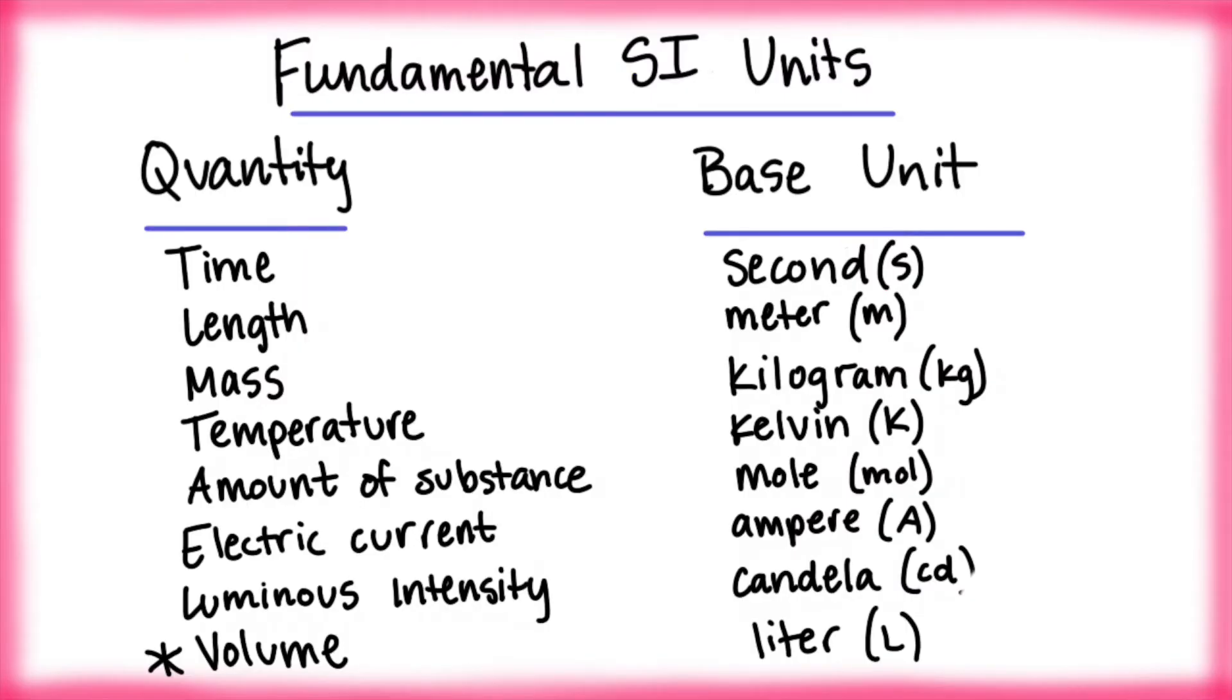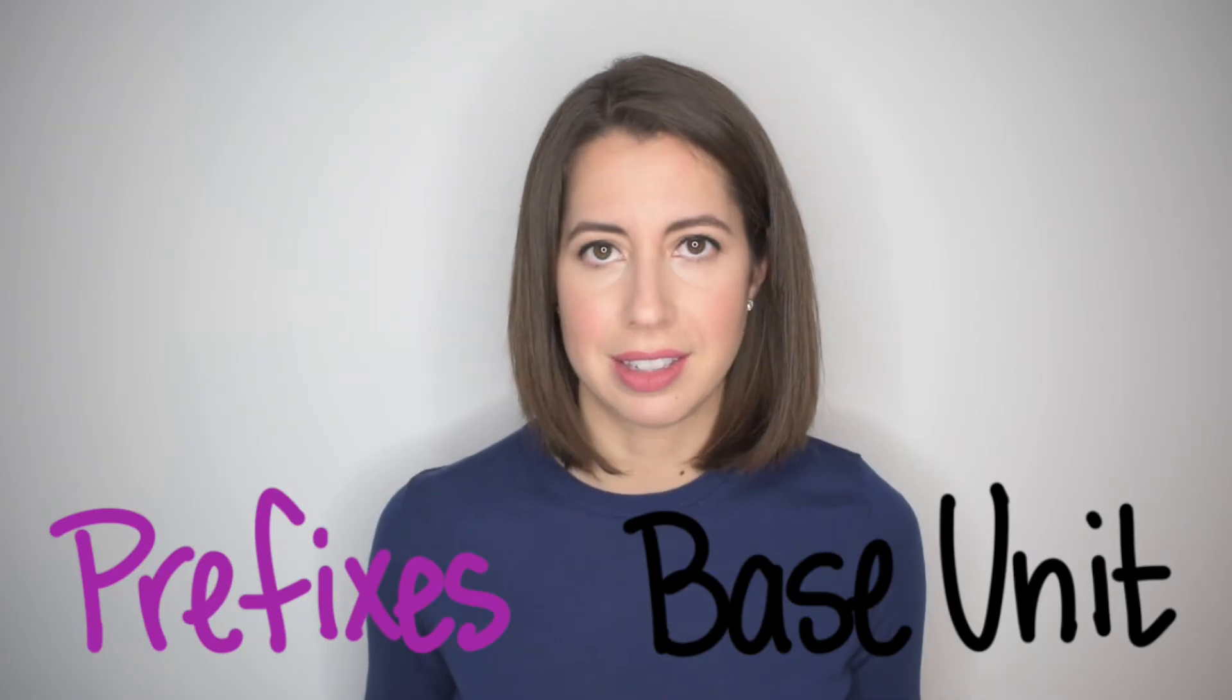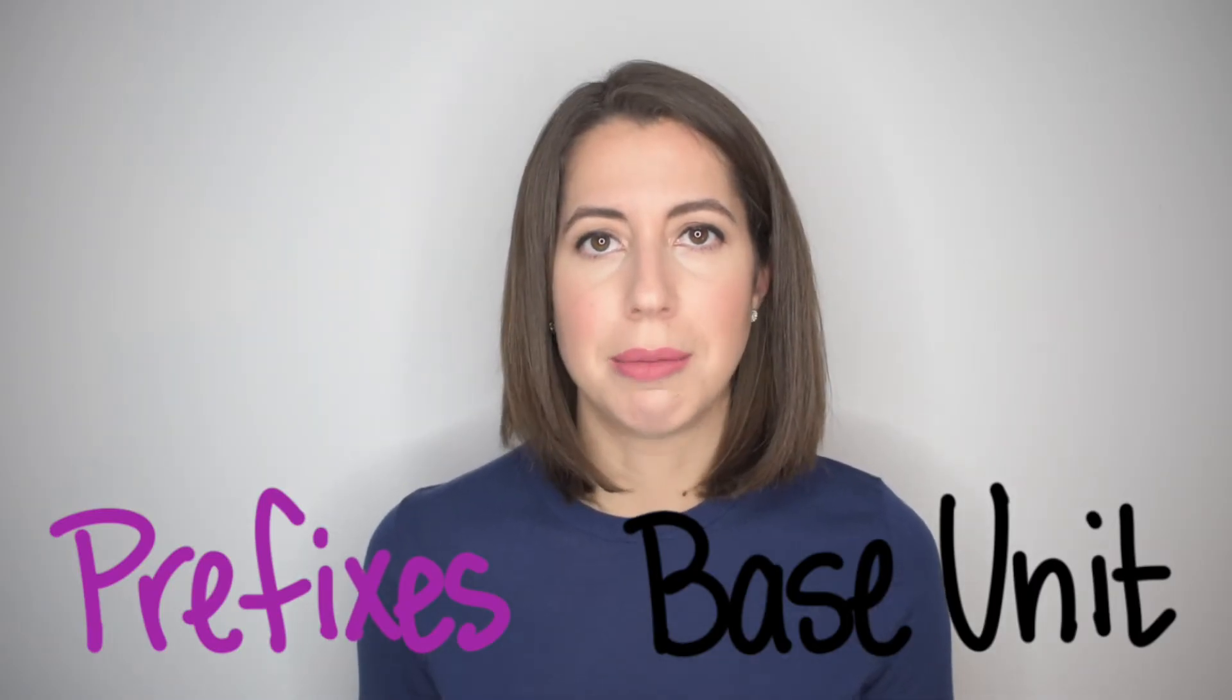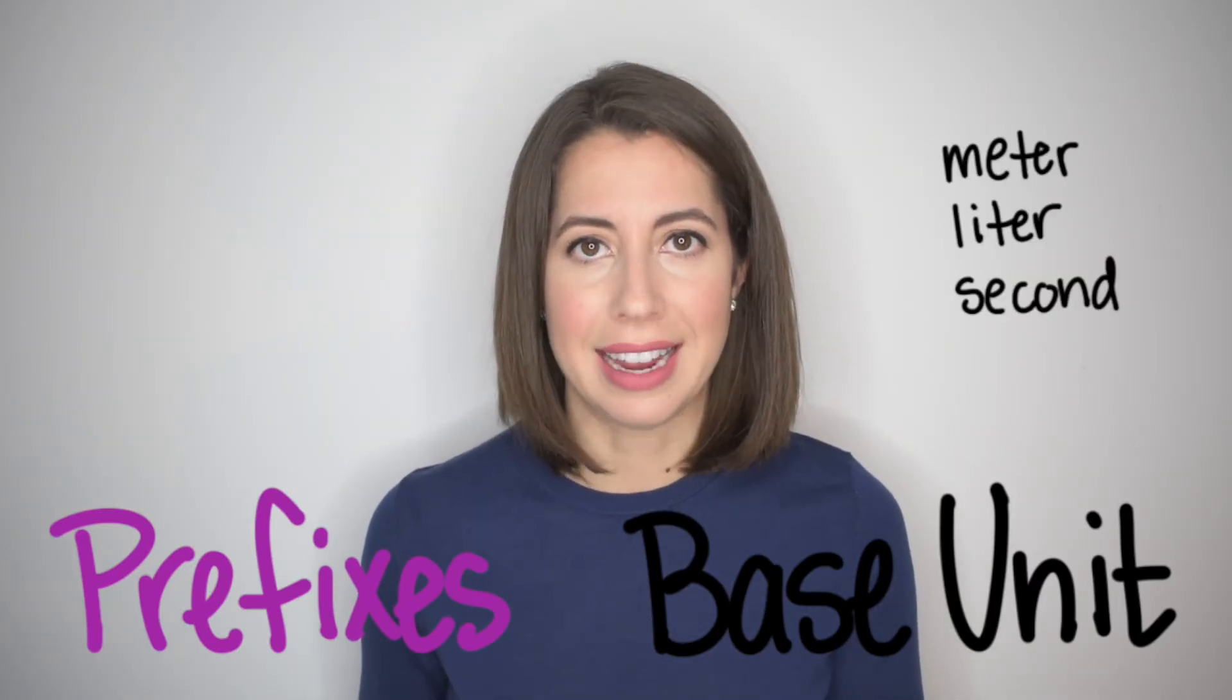Even though it's not one of the fundamental SI units, volume is used a lot in chemistry, so we're going to use it along with mass to do our metric conversions today. The metric system operates using base units and prefixes. The base units in the metric system are meters, liters, seconds, and grams.